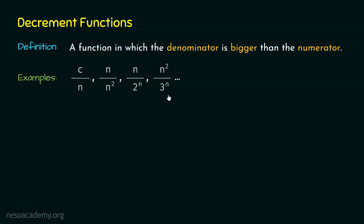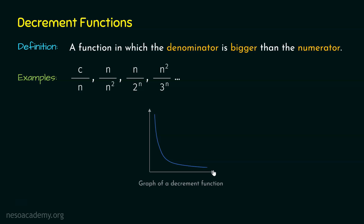Let's visualize a decrement function through a graph. This is the graphical representation of a decrement function. As the size of the input increases, a decrement function decreases and it approaches zero. This is the reason why these functions are called decrement functions — because a decrement function decreases as the size of the input increases. With this we understood what decrement functions are.